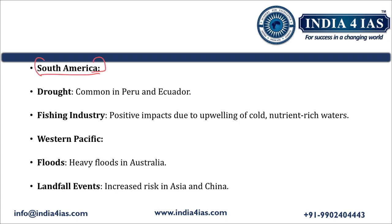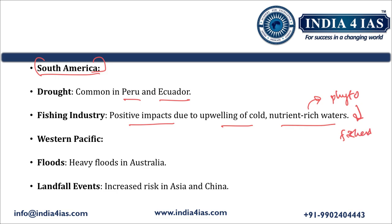In South America, La Nina causes drought in both Peru and the Ecuador region. However, the fishing industry is positively impacted due to the upwelling of cold, nutrient-rich waters. La Nina increases the intensity of this upwelling, which favors the growth of phytoplankton and in turn the growth of fish. This contrasts with El Niño, which suppresses cold water upwelling and is therefore harmful to the fishing industry.